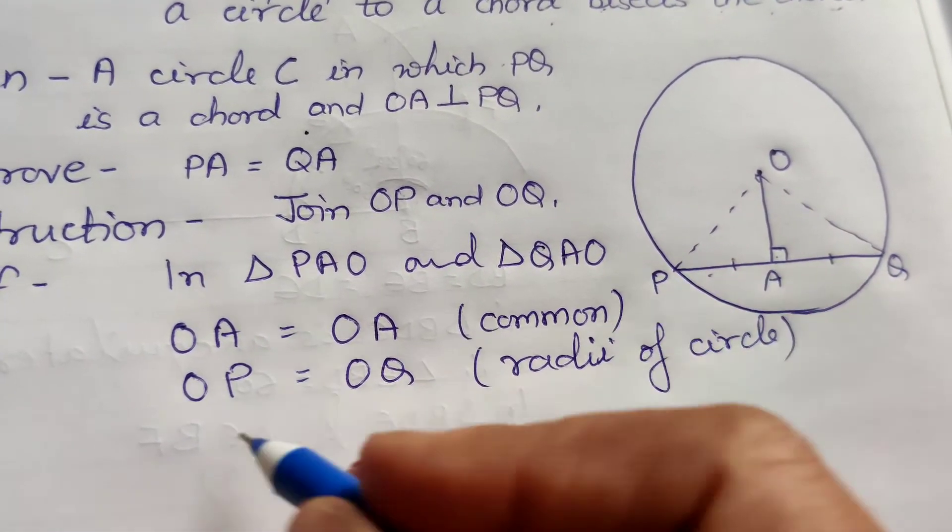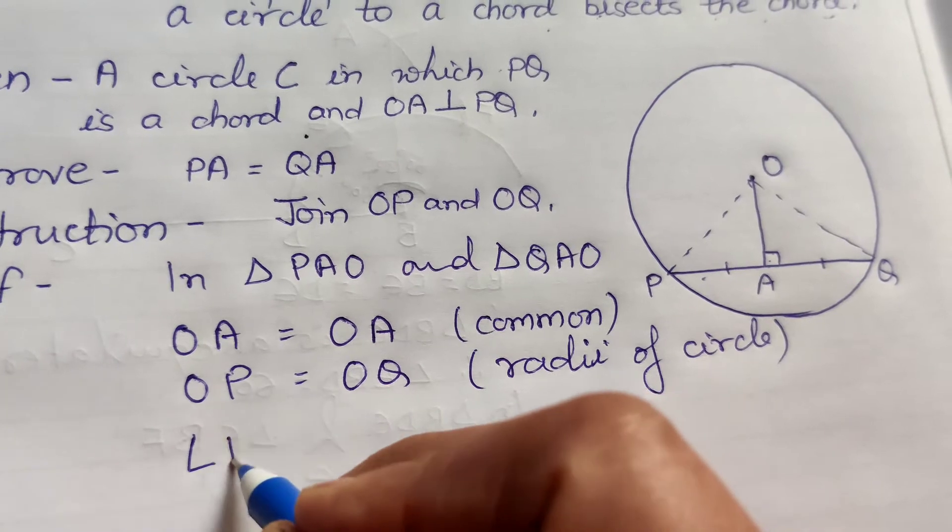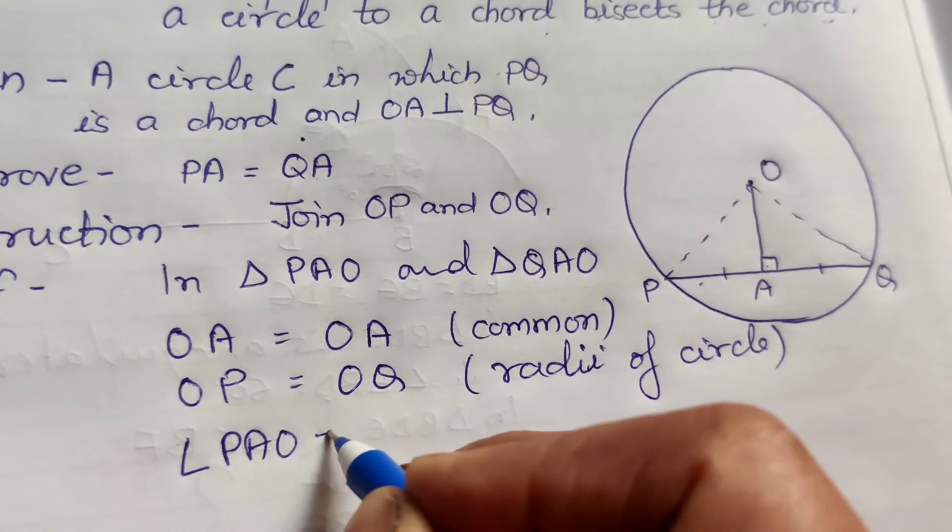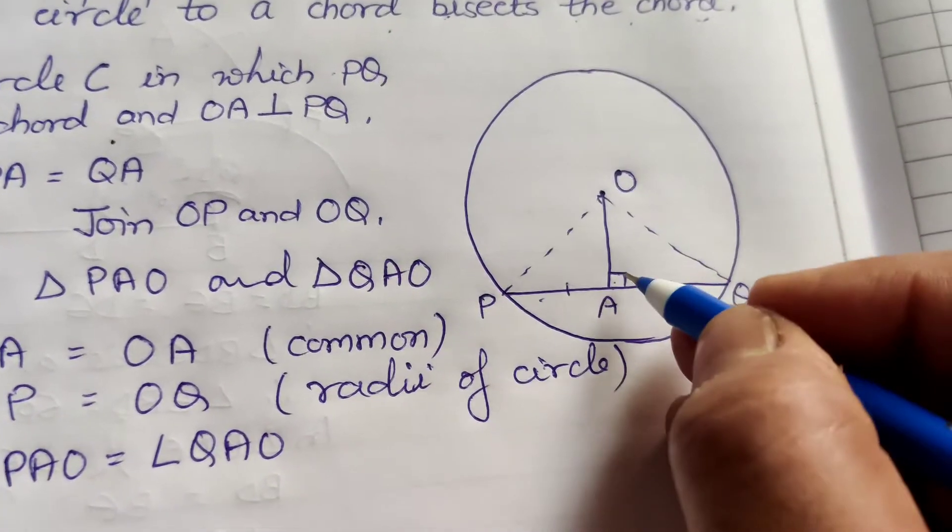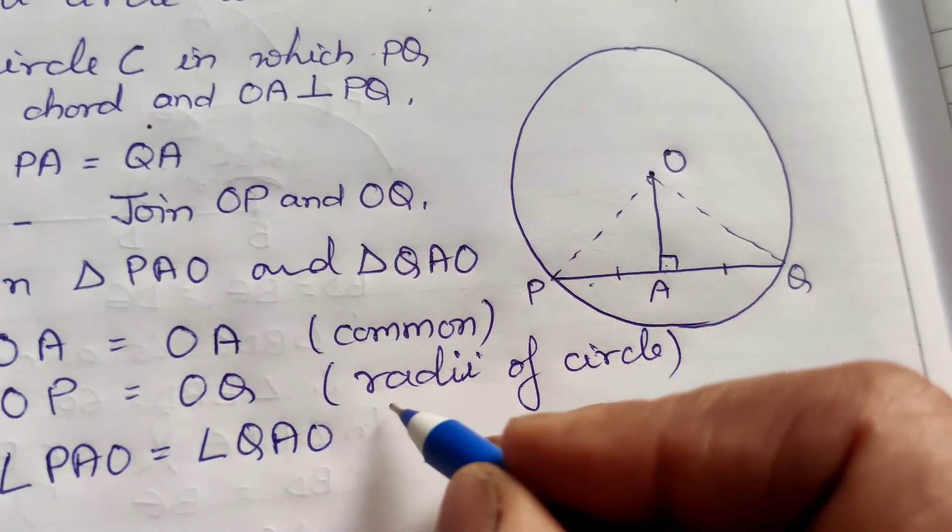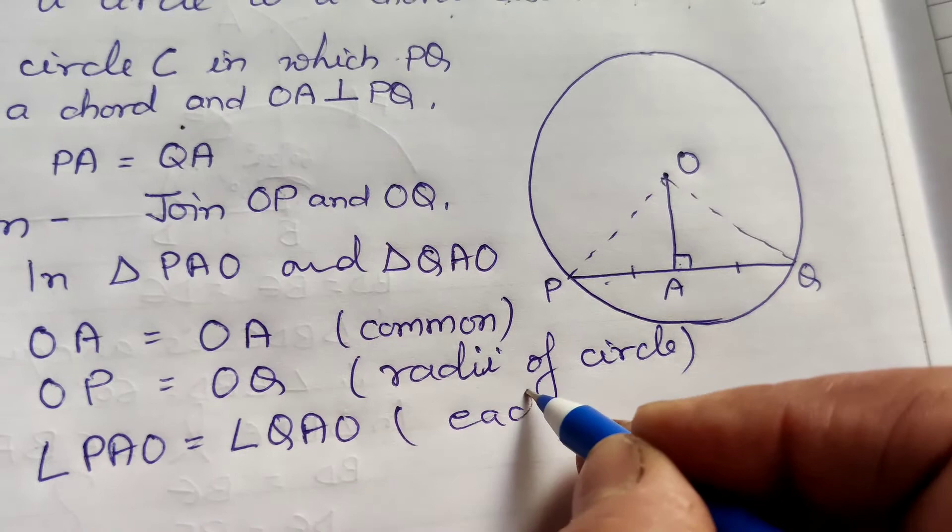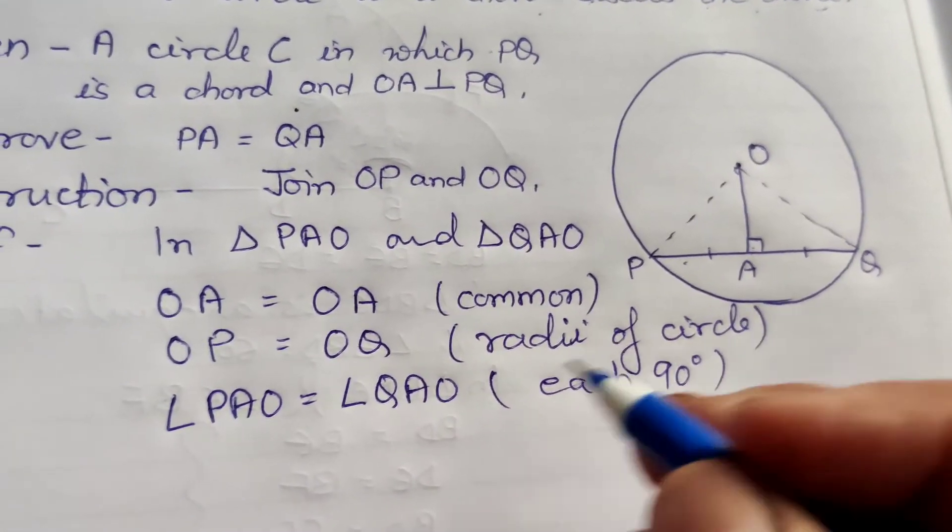Or tisra angle PAO equal to angle QAO. Pata hai, OA perpendicular hai PQ per. Each angle equal to 90 degrees. Duna 90 hai.